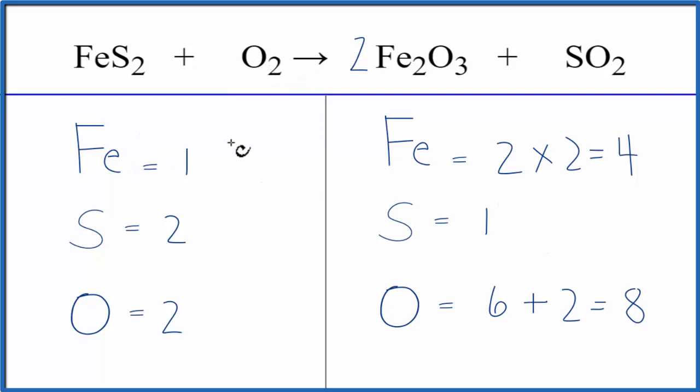Let's get our irons straight here. We have four on this side and one here, so we'll just put a coefficient of four. So one times four, the irons are balanced, and then two times four, that gives us eight sulfurs.